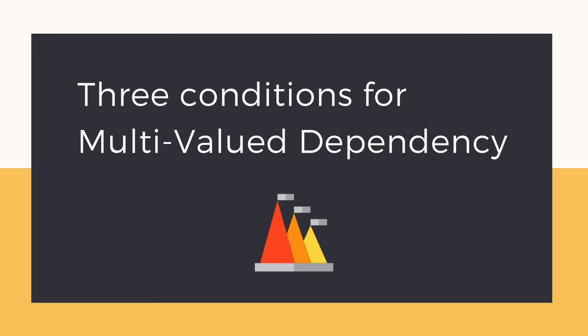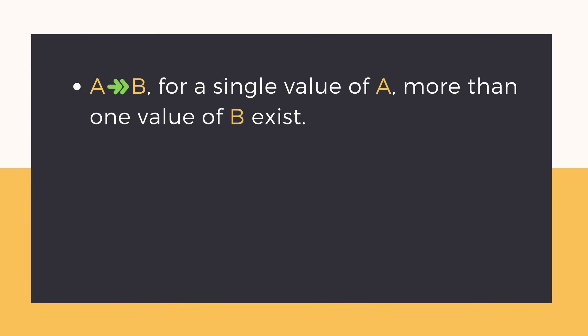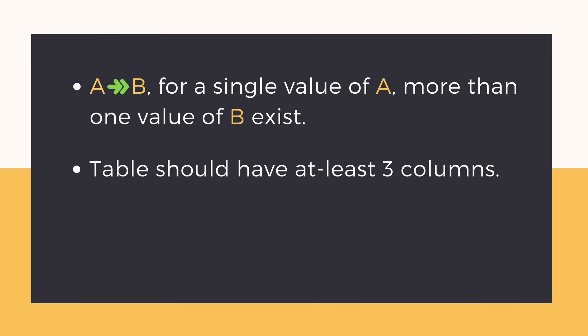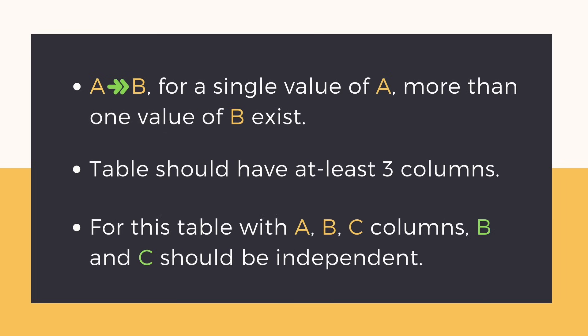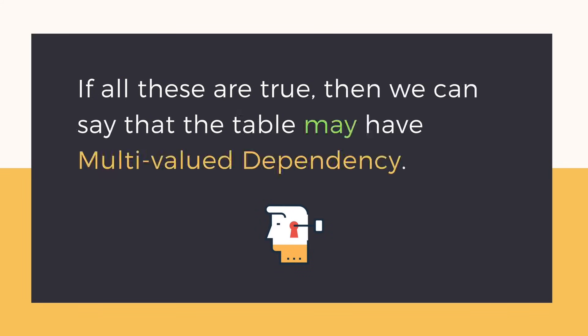So we have three points which when they occur together lead to multi-valued dependency: for A derives B, a single value of A must have more than one value of B; the table has at least three columns; and for a table with columns A, B, C, if A and B have a multi-valued dependency then B and C should be independent of each other. If all these are true for a table, it will have a multi-valued dependency.